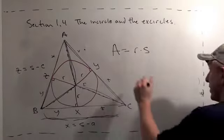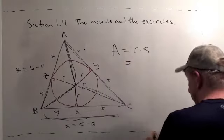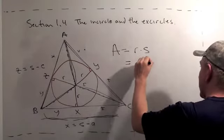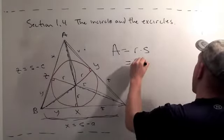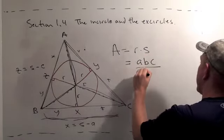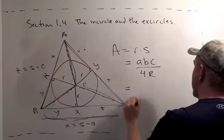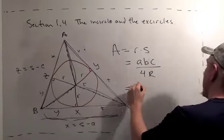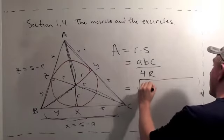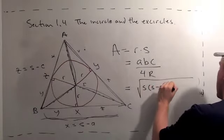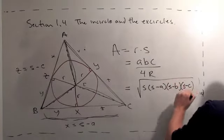We learned earlier that the area of the triangle is also equal to the product of the sides, ABC over 4R. And Heron's formula tells us that the area equals the square root of S(S minus A)(S minus B)(S minus C).